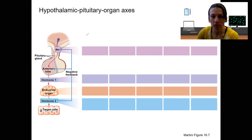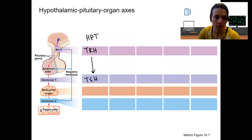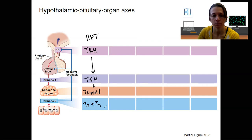One is going to be called HPT — that's the hypothalamus-pituitary-thyroid axis. We're going to have TRH, thyrotropin-releasing hormone, released from the hypothalamus, which targets the release of thyroid-stimulating hormone from the anterior pituitary. The endocrine gland targeted by TSH is the thyroid, which is going to release T3 and T4 — those are the names of the thyroid hormones. Those are going to affect metabolism, which we'll get into in a later video.